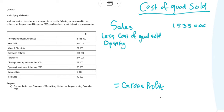Your opening inventory is the stock that you have at the beginning of the year that has not been sold yet. In this case our opening inventory is 23,000. Then we are going to add your purchases, because we're buying more things during the year.